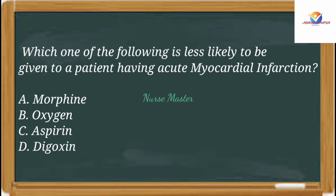Morphine is administered as analgesia because pain stimulates the sympathetic nervous system, increasing heart rate and vasoconstriction. Morphine is also a vasodilator that reduces ventricular preload and oxygen requirements. Digoxin is commonly used in heart failure; it is a cardiac glycoside, also called digitalis.